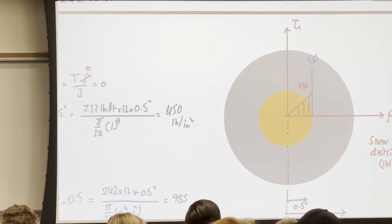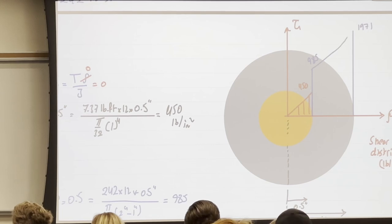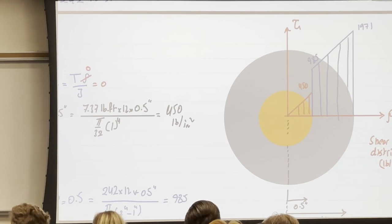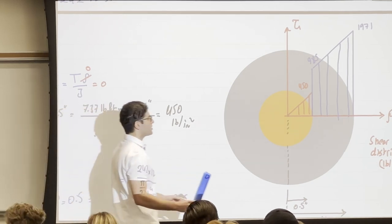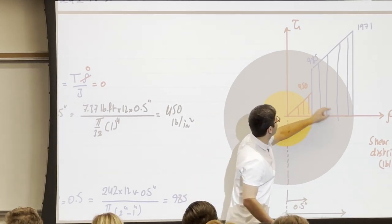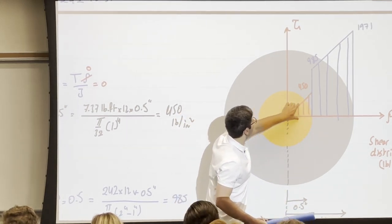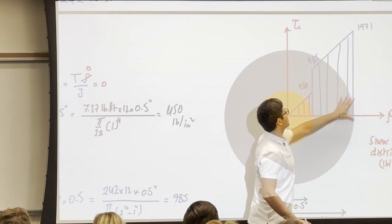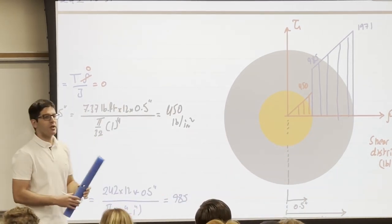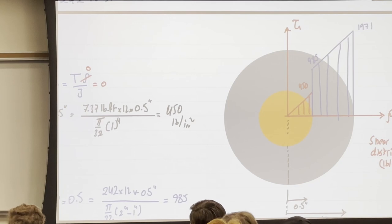This is the shear stress distribution for the cross section. The highest stress in the brass is at its outer radius (450 psi), and the highest stress in the steel — and the entire cross section — is at the outer radius of steel (1971 psi). The further from the center, the higher the stress. This confirms the expected behavior.